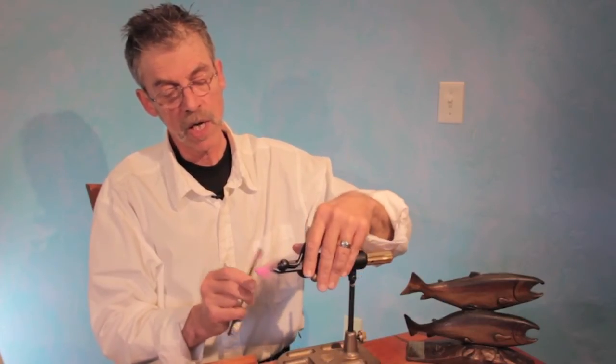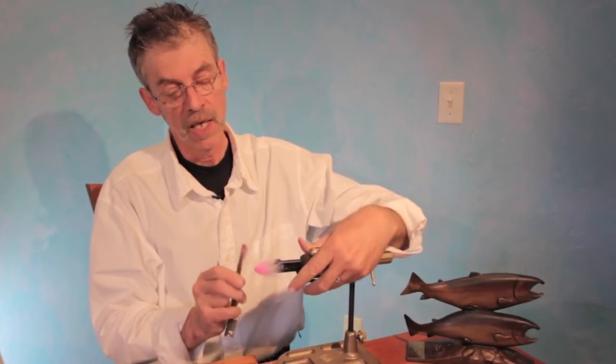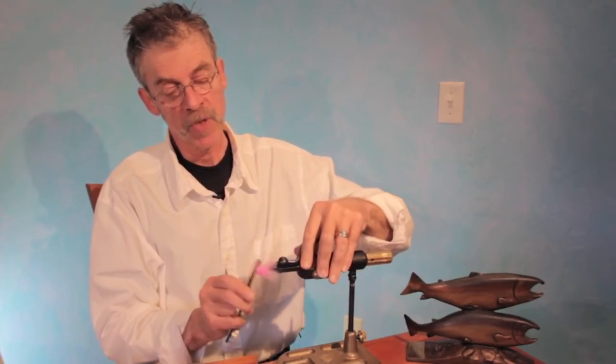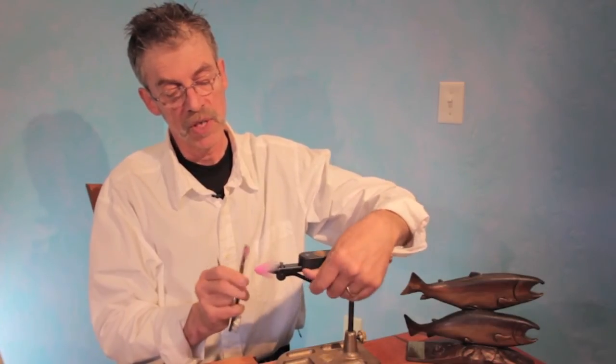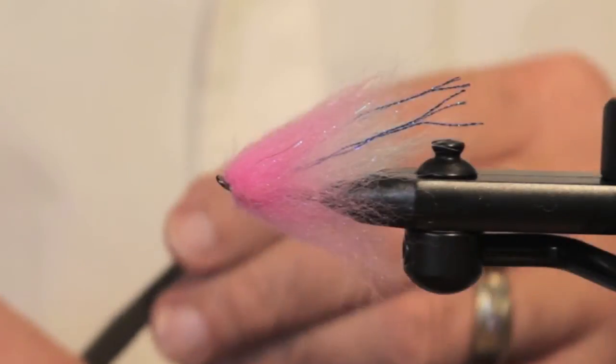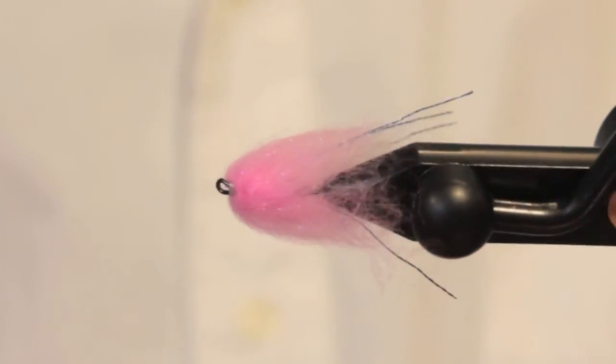And you know I said we were going to talk about three methods of using hair to form a collar. I guess I misspoke. This isn't hair. The first two were. But this really gives the impression. There you go. Senyo's laser dub.